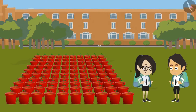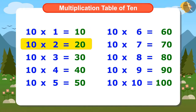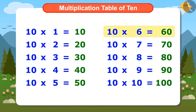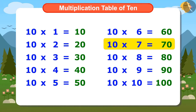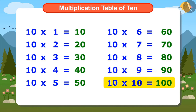Let me memorize by singing the Multiplication Table of 10. 1 ten is 10, 2 tens are 20, 3 tens are 30, 4 tens are 40, 5 tens are 50, 6 tens are 60, 7 tens are 70, 8 tens are 80, 9 tens are 90, 10 tens are 100.